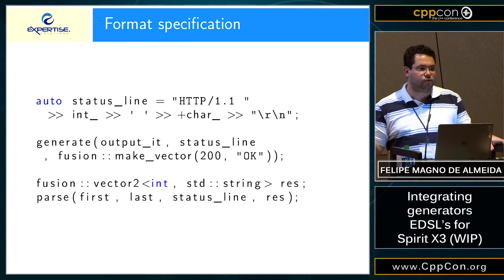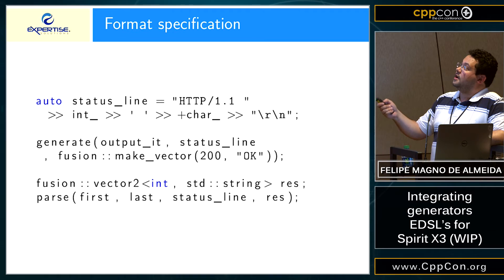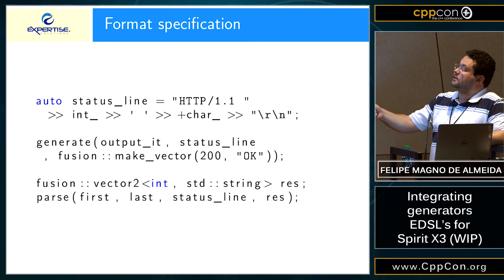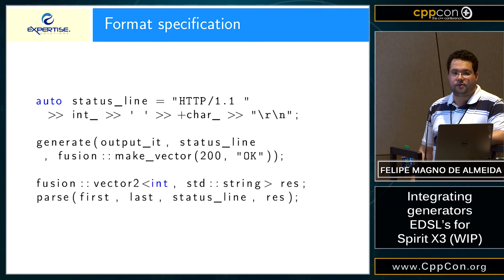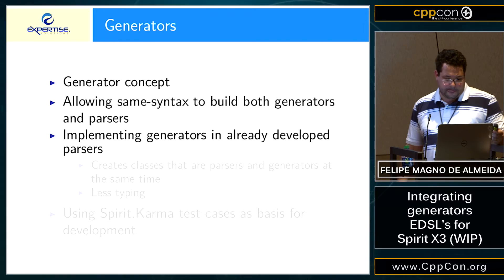For example, you can say it has 'HTTP', then an int, then more chars. To generate, you can pass the number 200 and 'OK' for the status line and generate it. For parsing, you do the opposite — you pass what's going to be attributed to. You can use the same status line expression to both generate and parse, building the same expression template each time.